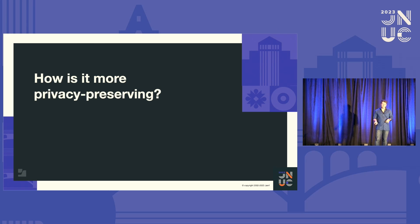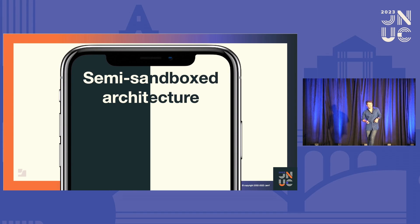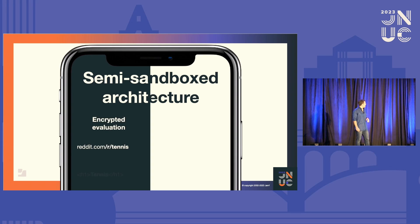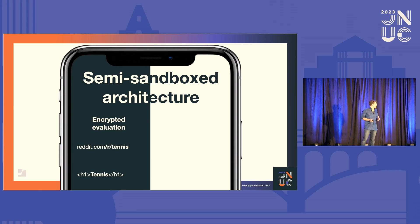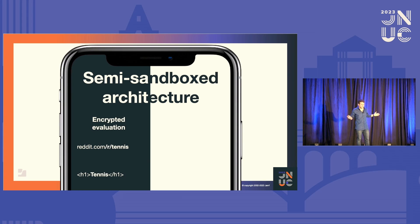How is it more privacy-preserving? Thanks to Apple's semi-sandboxed architecture of the network extension, there's privacy by design. Evaluation is done in the encrypted side of the network extension, where all sensitive data is stored. For example, you'd get the query parameters, the content of a website — a path and part of the DOM, like just a heading of a topic you might be interested in. All of that evaluation is done in this black box in the network extension, where it's totally out of bounds for reporting but fully accessible for evaluation.